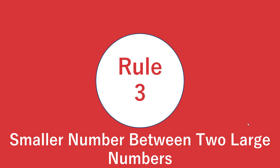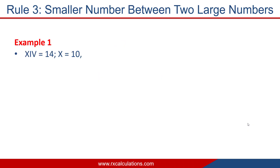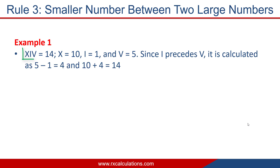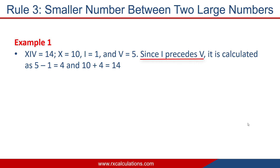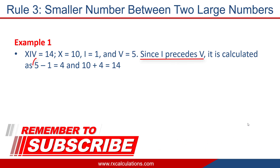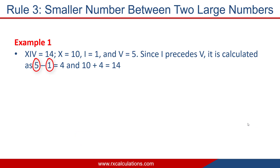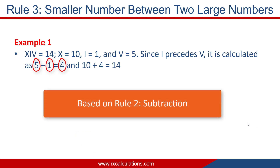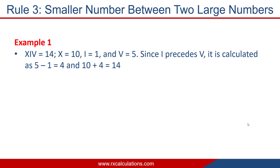Rule number 3 shows what to do when you have a smaller number between two large numbers. For example, XIV: X = 10, I = 1, V = 5. I is smaller than both X and V. Since I precedes V, apply rule 2: 5 − 1 = 4. Now 4 is to the right of a larger number, so apply rule 1: 10 + 4 = 14.